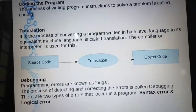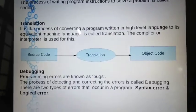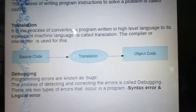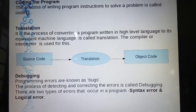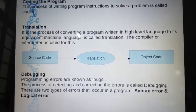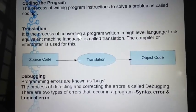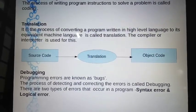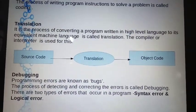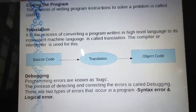Translation converts a high-level language into machine code. We will use the programming language and a compiler to translate the source code into object code. We can also use a compiler or interpreter to perform this translation.